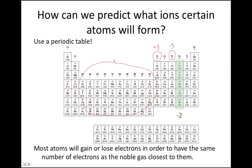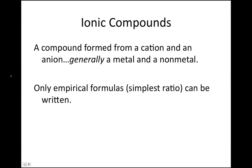An ionic compound is a compound formed from a cation and an anion — a positively charged ion and a negatively charged ion. Typically that's a metal and a nonmetal, although you can see some exceptions where you have a polyatomic cation, which is also a nonmetal, combining with a nonmetal anion, giving you an ionic compound that is two nonmetals.